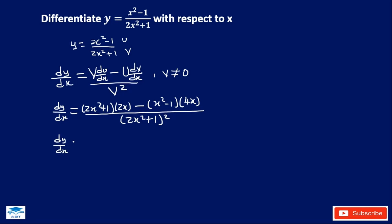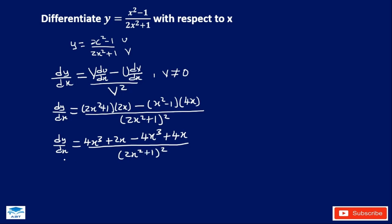So dy/dx equals: we expand and simplify the numerator. 2x times 2x squared is 4x cubed, and 2x times 1 is 2x. Then 4x times x squared is 4x cubed, and 4x times 1 is 4x — but negative times negative is positive. So 4x cubed minus 4x cubed is 0, and 2x plus 4x gives 6x in the numerator.